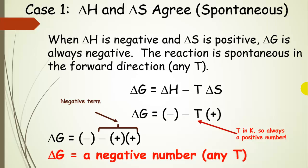When delta H is negative — exothermic — and the change in entropy is positive, delta G is always going to be negative. It doesn't matter what the values of enthalpy or entropy are; all that matters is the sign because they both agree. If we plug signs into the equation delta G = delta H − T·delta S, we have a negative minus a positive term. Since temperature is always positive in Kelvin and delta S is positive, we're subtracting a positive quantity from a negative, making delta G even more negative. So regardless of temperature, the process is spontaneous in the forward direction.